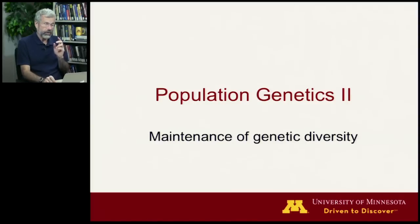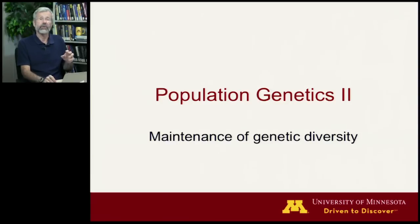We've seen that of all the microevolutionary processes, natural selection is the most powerful. And given the power of natural selection to change gene frequencies over the course of maybe a dozen generations or less, this actually raises an interesting problem: what is it that maintains all the genetic diversity that we routinely observe in different populations?